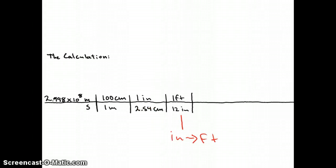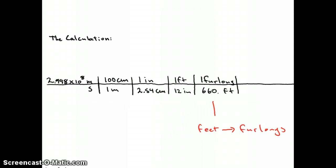Then we convert inches to feet. Everyone knows there are 12 inches in 1 foot. And the last distance conversion we do is one of the esoteric ones. There are 660 feet in 1 furlong.